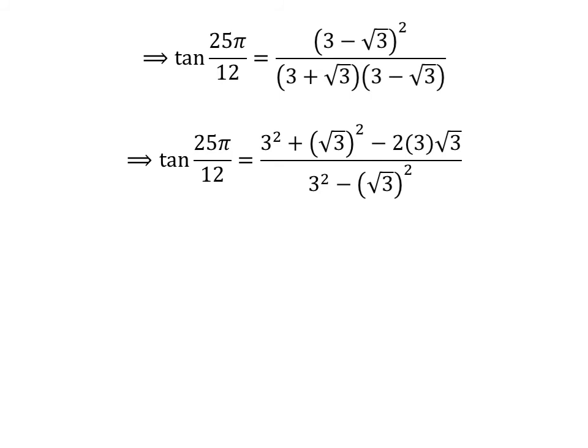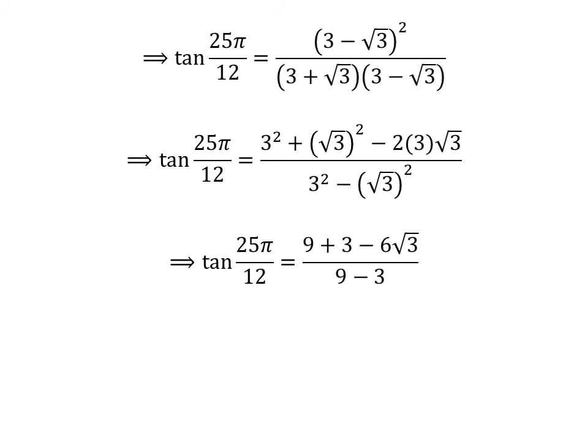In the denominator, 3 plus square root of 3 times 3 minus square root of 3 is equal to the square of 3 minus the square of square root of 3, giving 9 minus 3. So tangent of 25 times pi upon 12 is equal to 9 plus 3 minus 6 times square root of 3 upon 9 minus 3, which further simplifies to 12 minus 6 times square root of 3 upon 6.